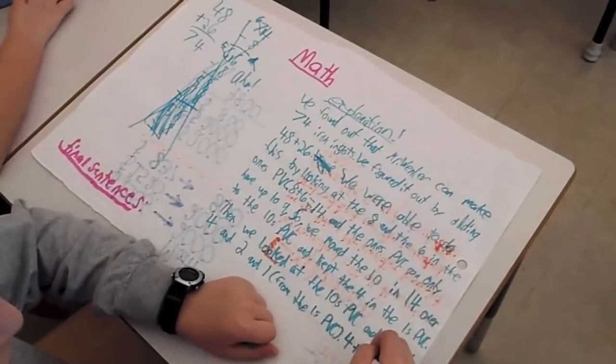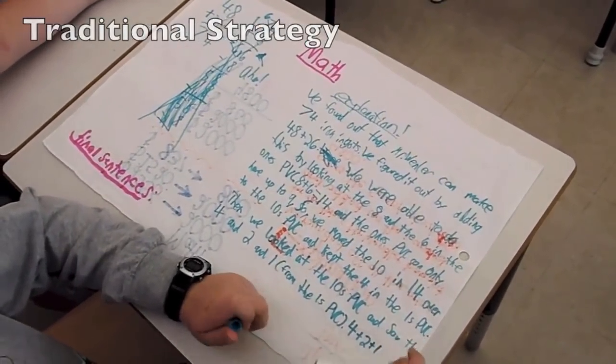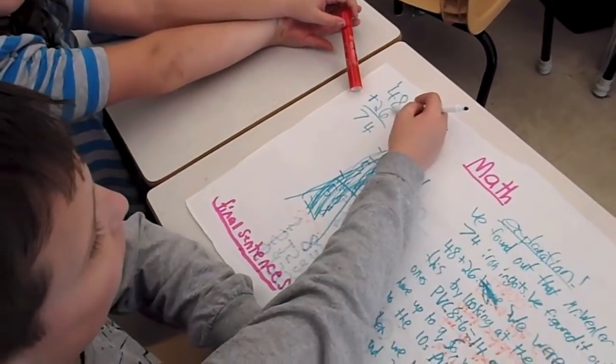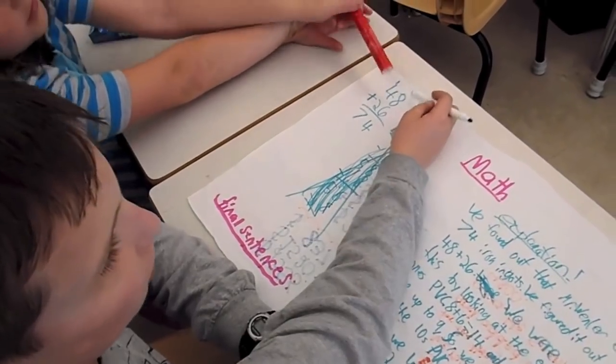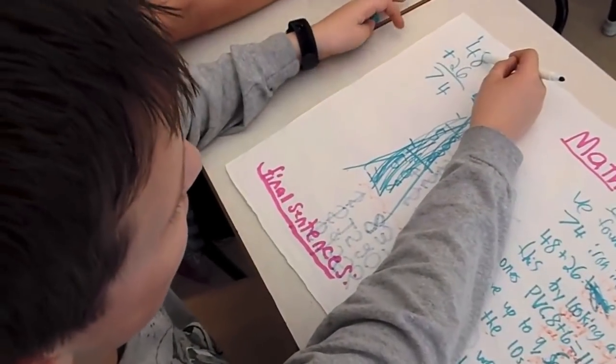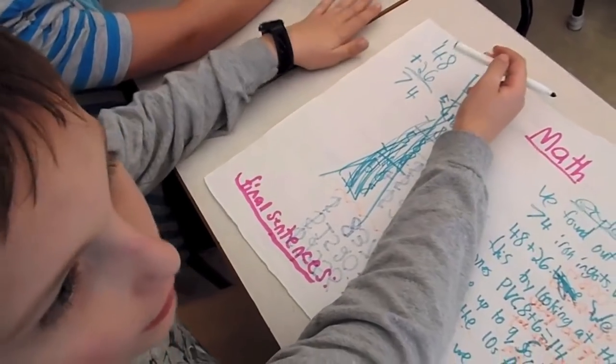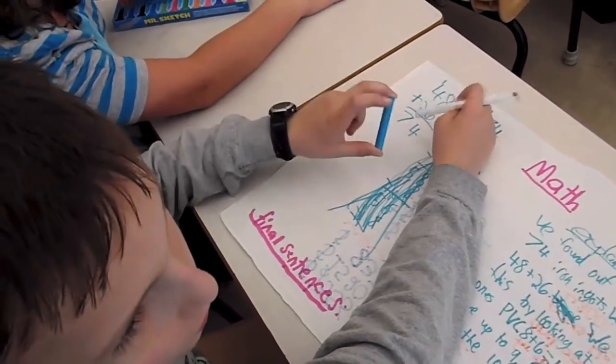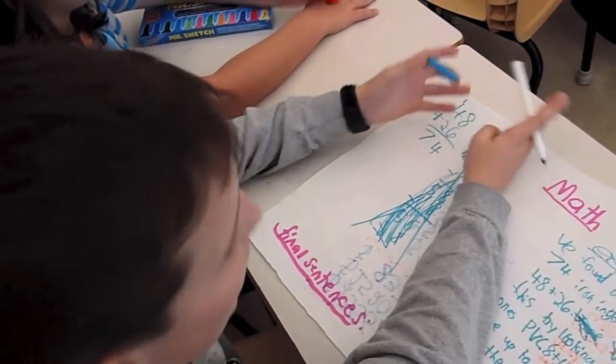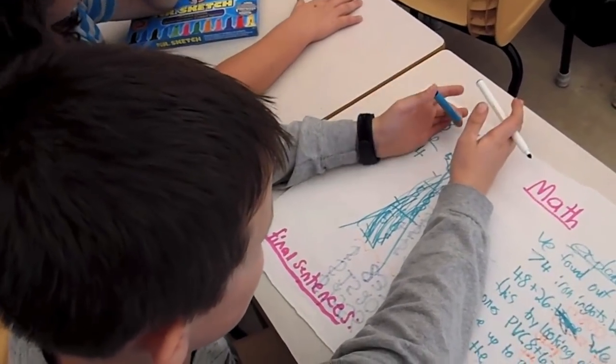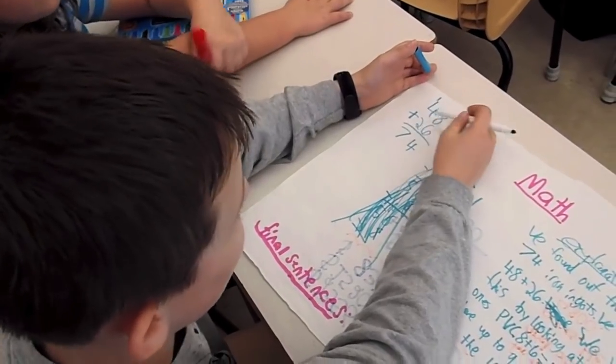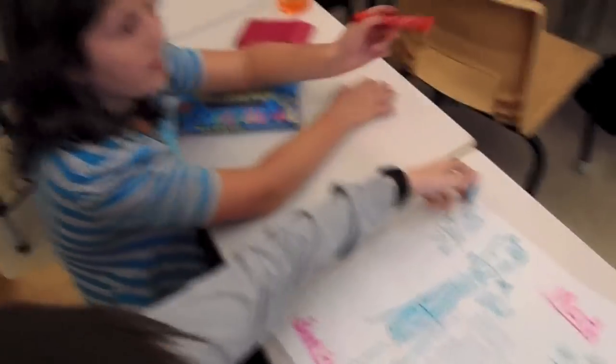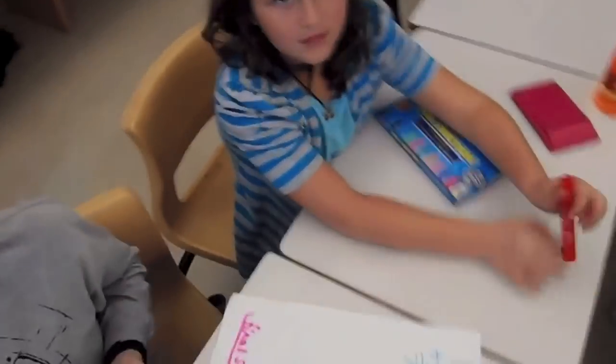We're adding 48 plus 26. You first look at the ones place value column, but we saw that 8 plus 6 is higher than 10, and the ones place value column can only go up to 9. So we moved the 10 in 14 over to here and kept the 4 in the ones place value column. 1 plus 2 plus 1 equals 4, which gives us a total of 74.